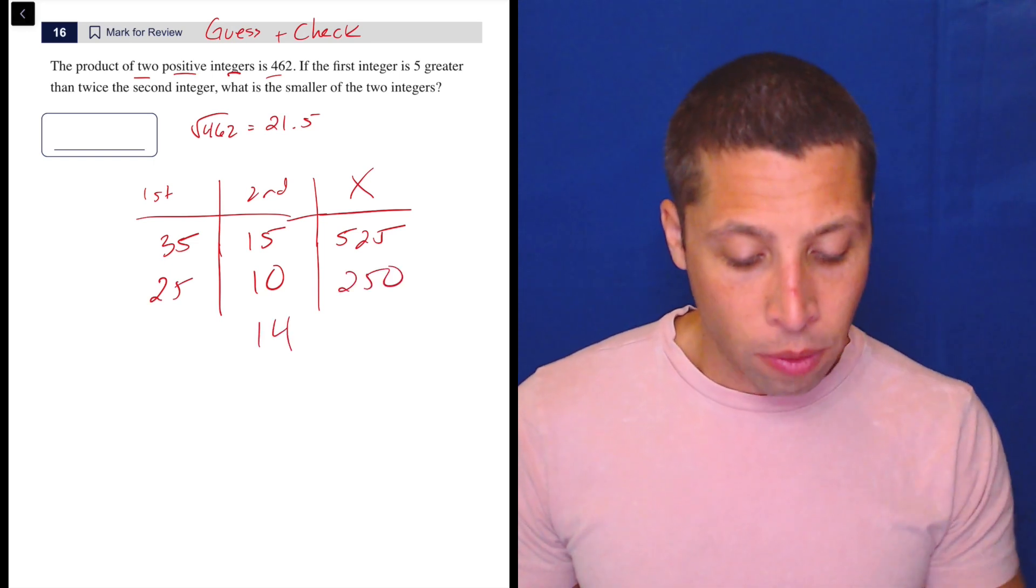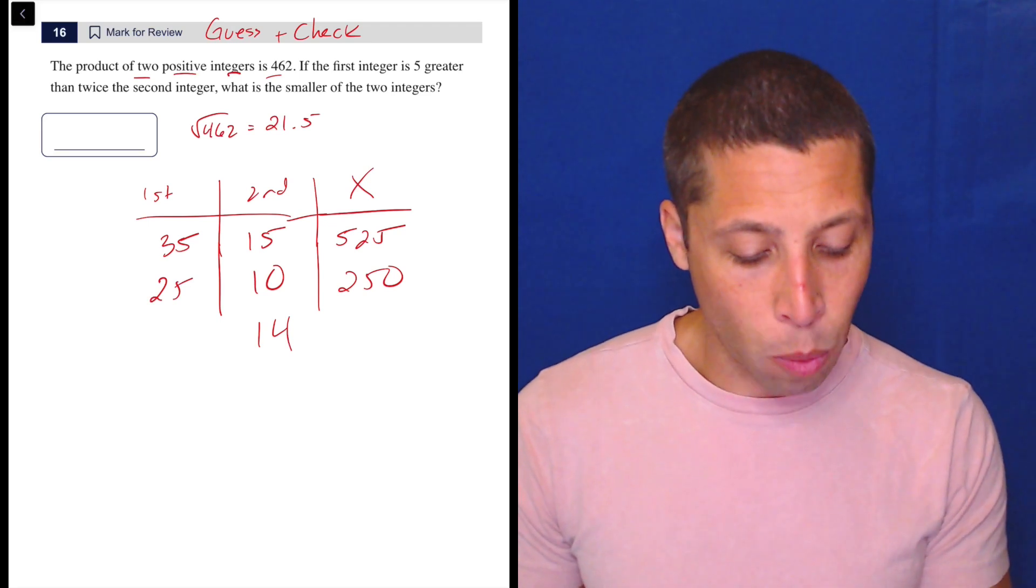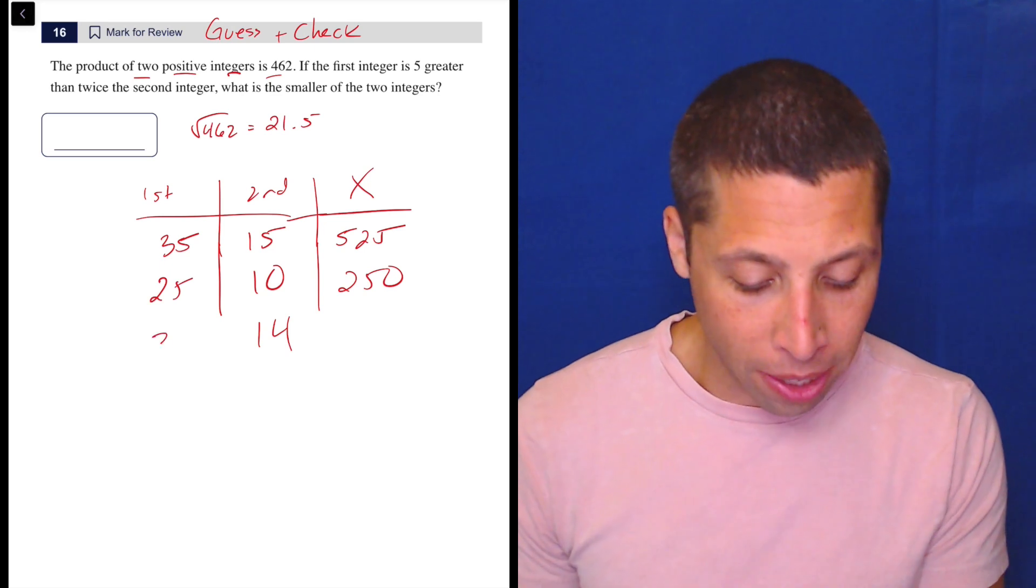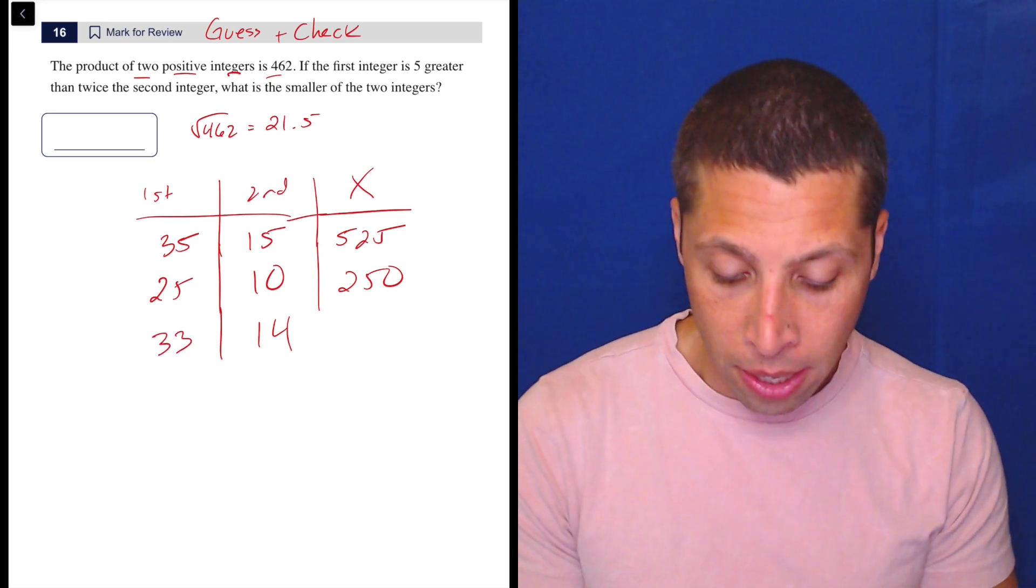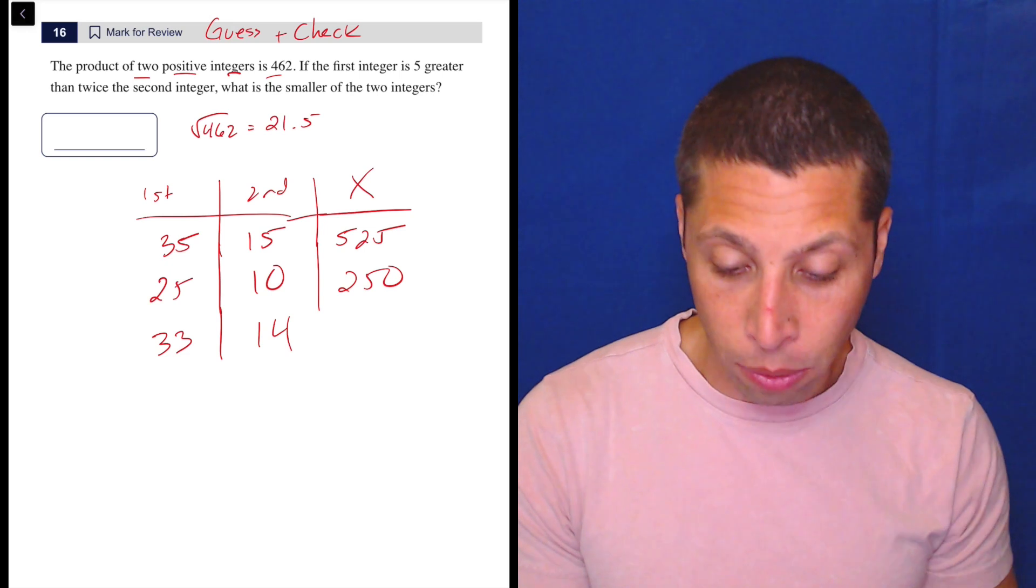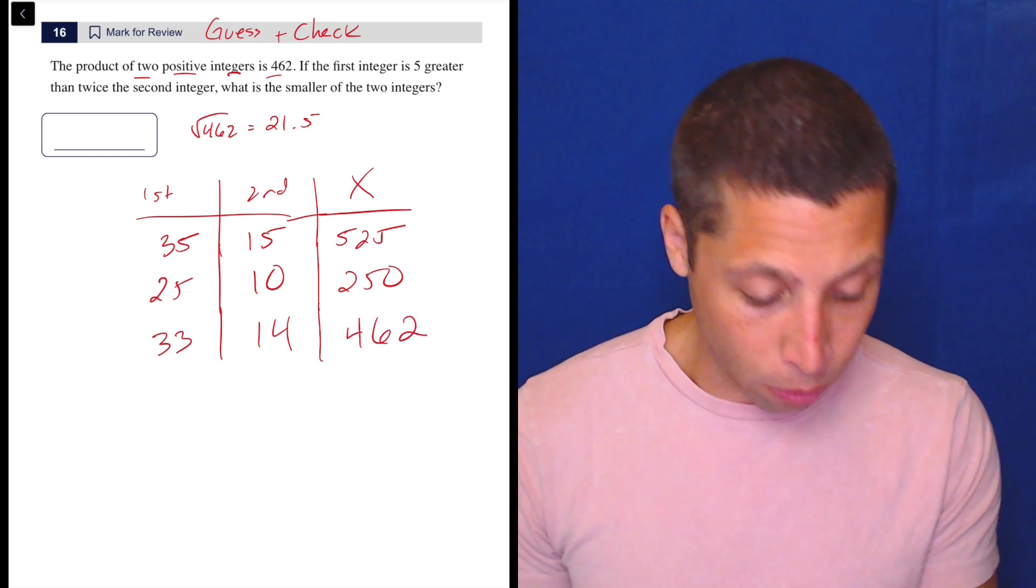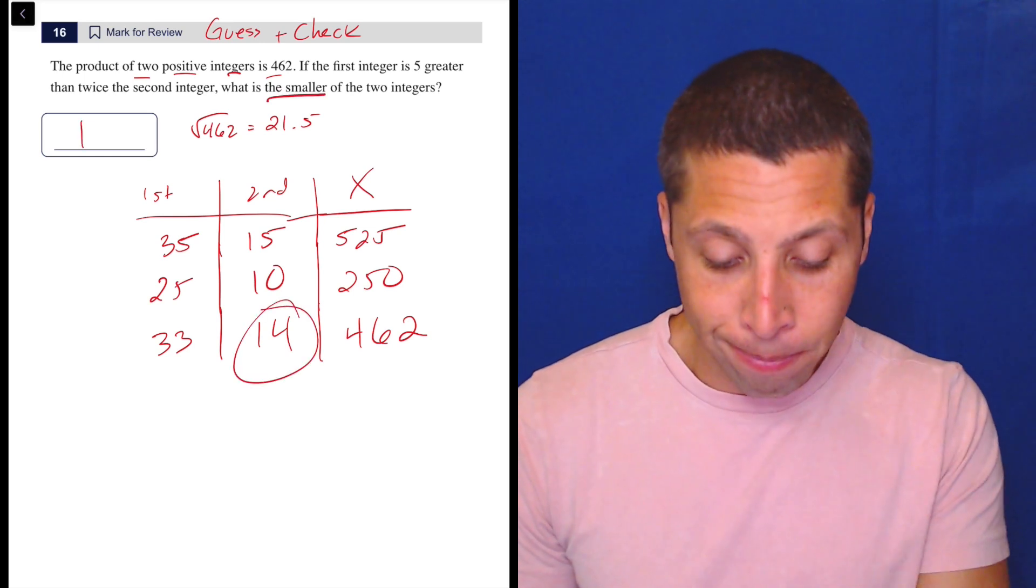Let's maybe go to 14. So five greater than twice the second. Twice 14 is 28. So 28 plus five is 33. Notice how I'm doing all this in my head. I guess I could write stuff for you guys, but for me, the benefit of guessing and checking is I don't need to. 33 times 14 is 462. So I'm done. What is the smaller of the two integers? It's 14. Done.